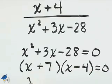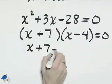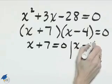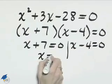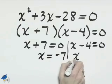And solving each of these, x plus 7 equals 0 and x minus 4 equals 0, will give us the values that we need. x equals negative 7 and x equals 4.